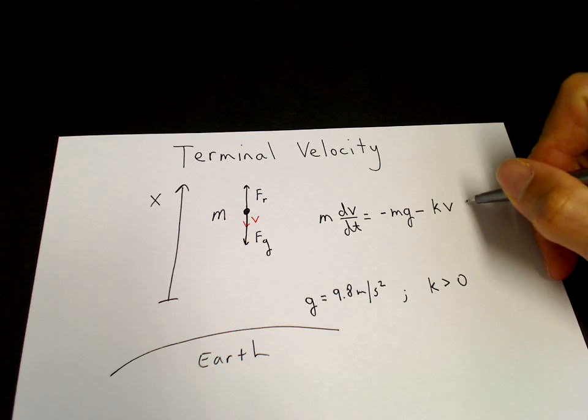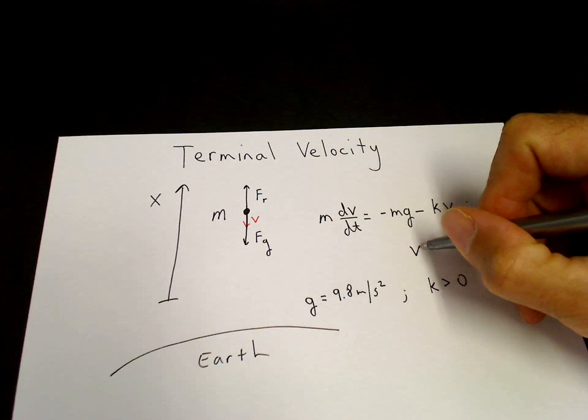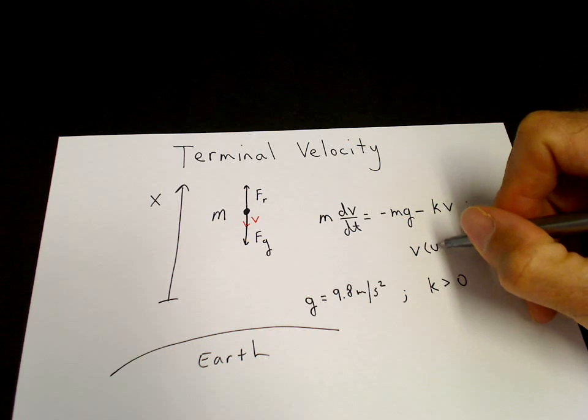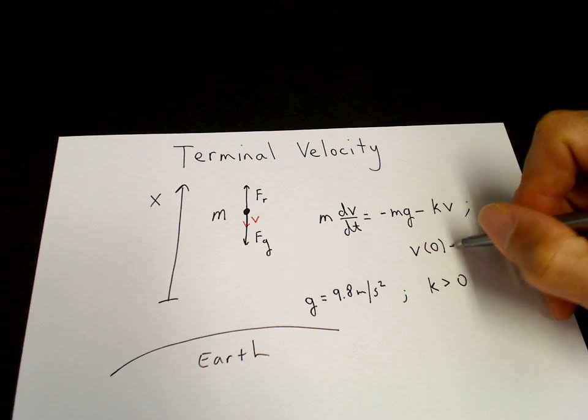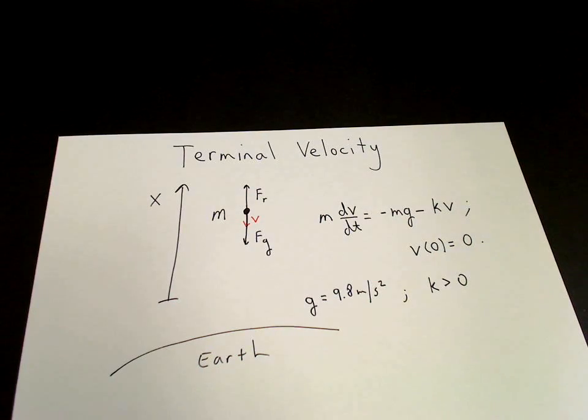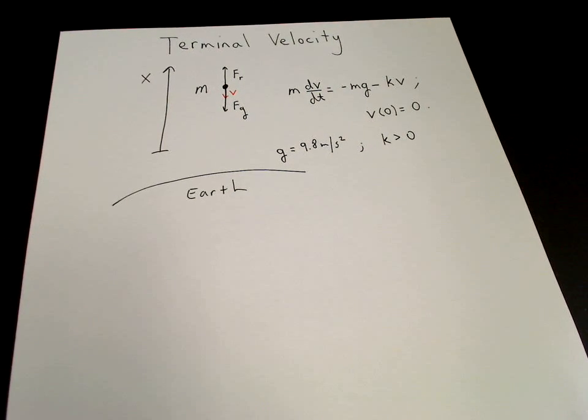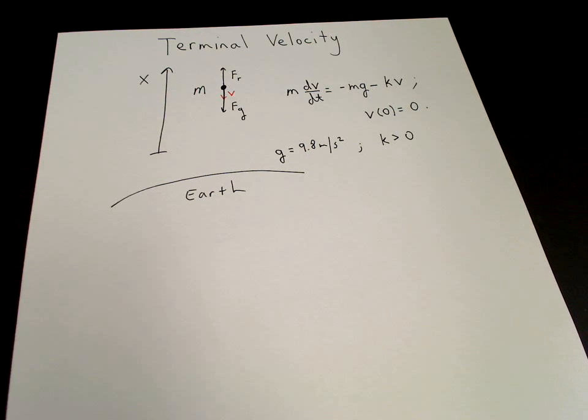Then we can solve this equation with an initial condition. We'll assume that the mass is perhaps a skydiver. So at t equals zero, the velocity of the mass we take to be zero. So that would be the vertical velocity of the mass. This is both a separable equation and a linear equation.